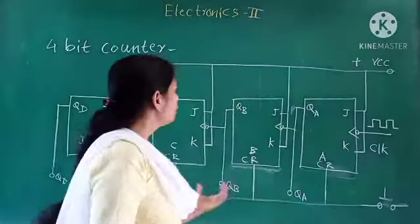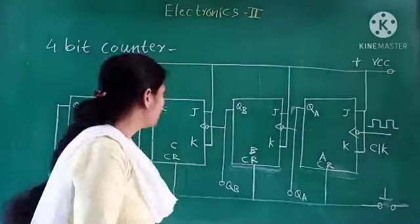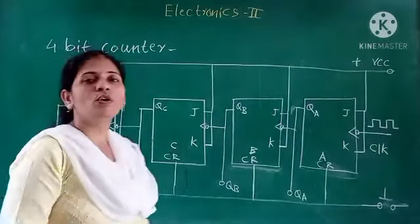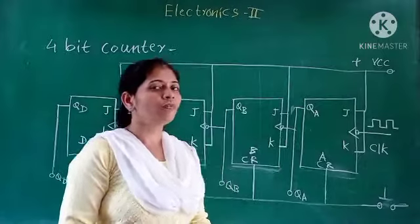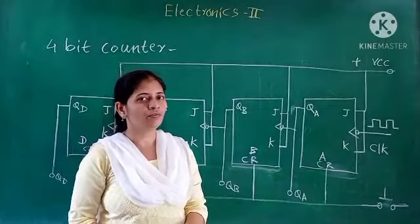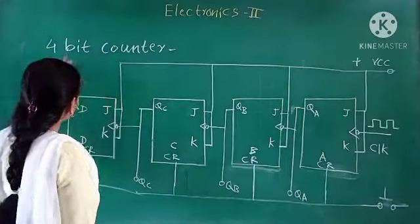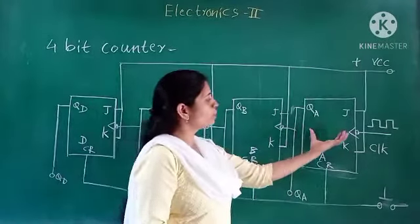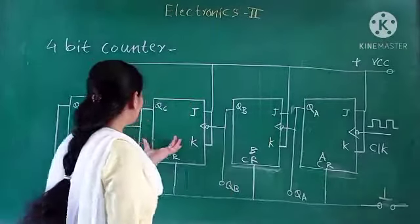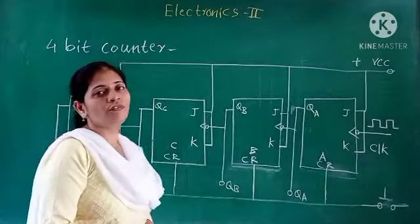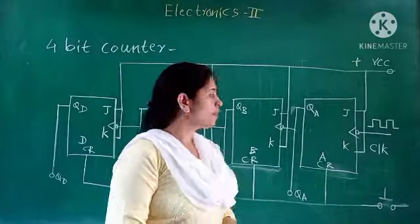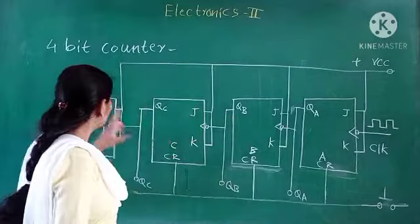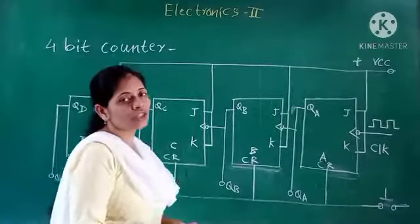Now let's see how the 4-bit binary counter will work. It is a 4-bit binary counter, also known as a mod 16 counter, as we are getting 16 pulses. As the name suggests, we require 4 flip-flops, and all four flip-flops are JK type.